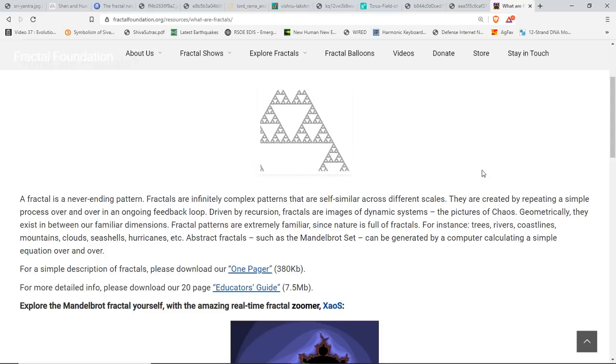Fractals are images of dynamic systems, the picture of chaos. Chaos ordo ab chaos—order comes out of chaos. Geometrically, they exist in between our familiar dimensions. Fractal patterns are extremely familiar since nature is full of fractals. For instance, trees, rivers, coastlines, mountains, clouds, seashells, hurricanes.